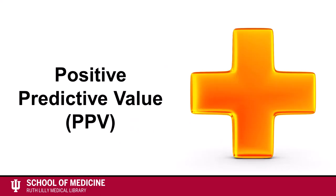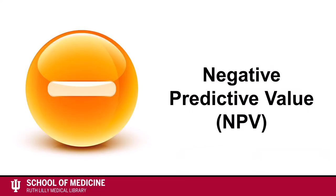The positive predictive value of a diagnostic test, or PPV, is the proportion of people who actually have the disease out of all of the people who tested positive. The negative predictive value, or NPV, is the proportion of people who do not have the disease out of all of the people who tested negative.